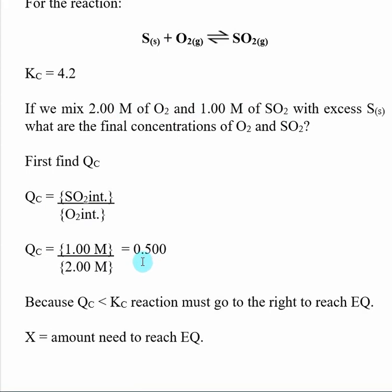And then we compare Q to K and see what the relationship is. In this case, Q, 0.5, is less than K, 4.2, which means the reaction must go to the right to reach equilibrium.